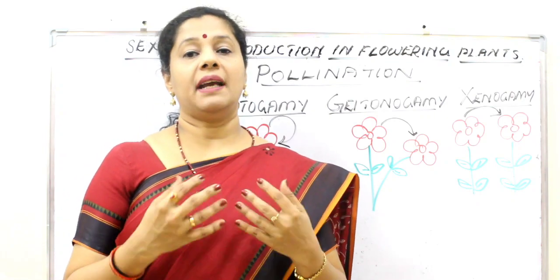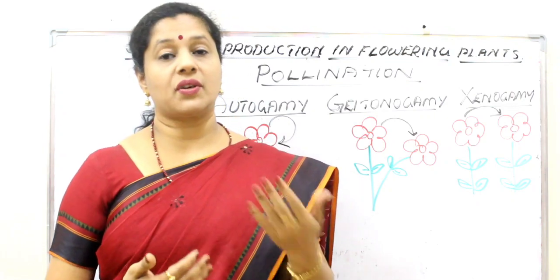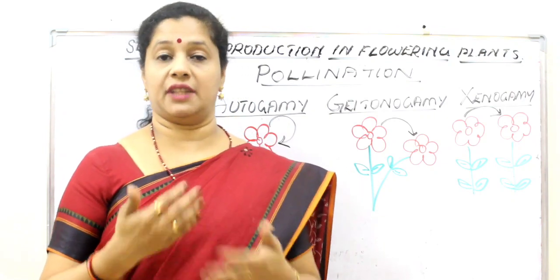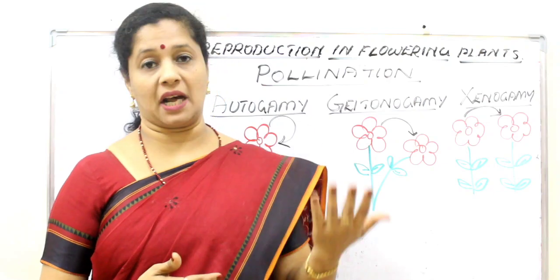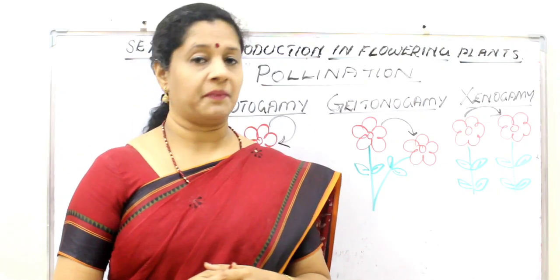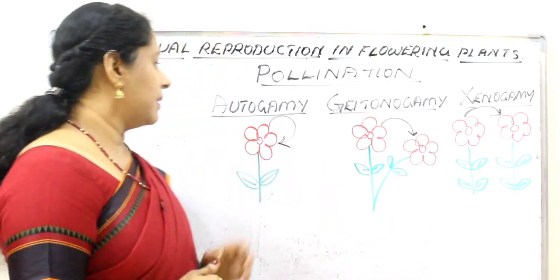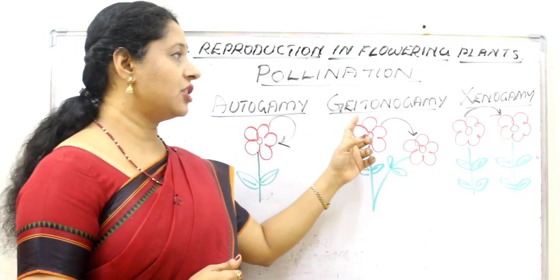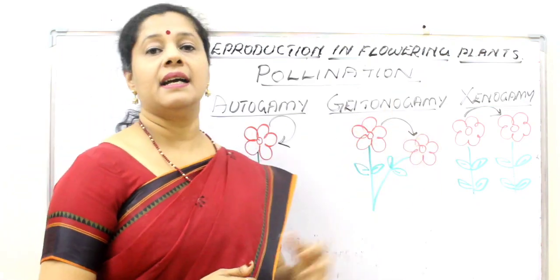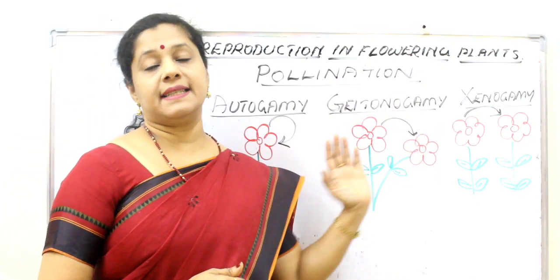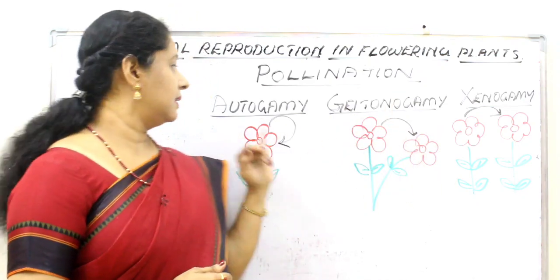Depending on how pollen is transferred — from flower to flower, within the same flower, or from plant to plant — there are three types of pollination: autogamy, geitonogamy, and xenogamy. Let us see them one by one. This diagram will tell you what each one means.